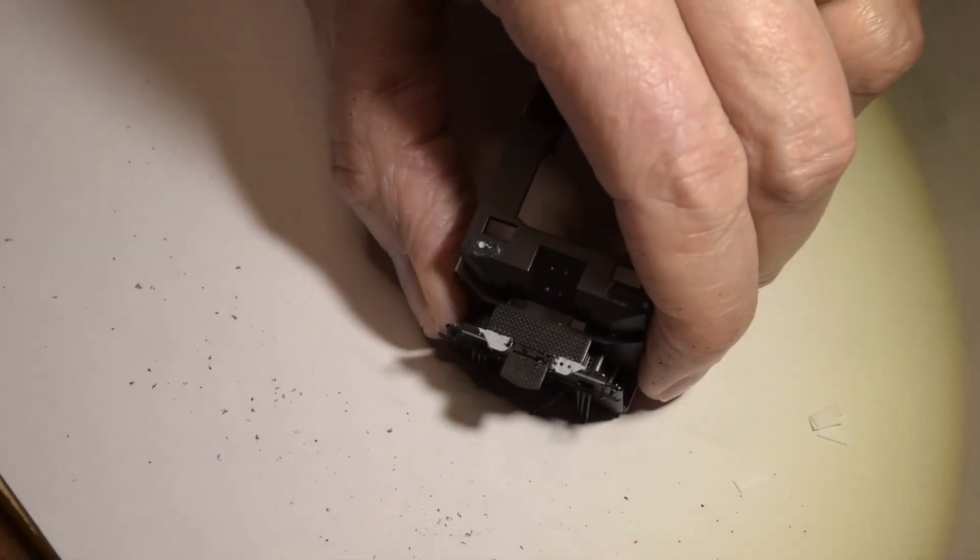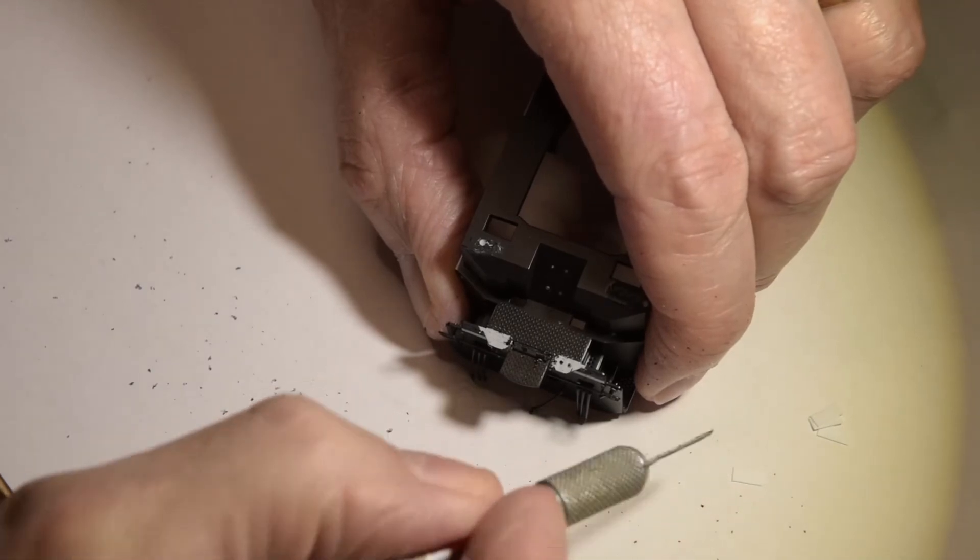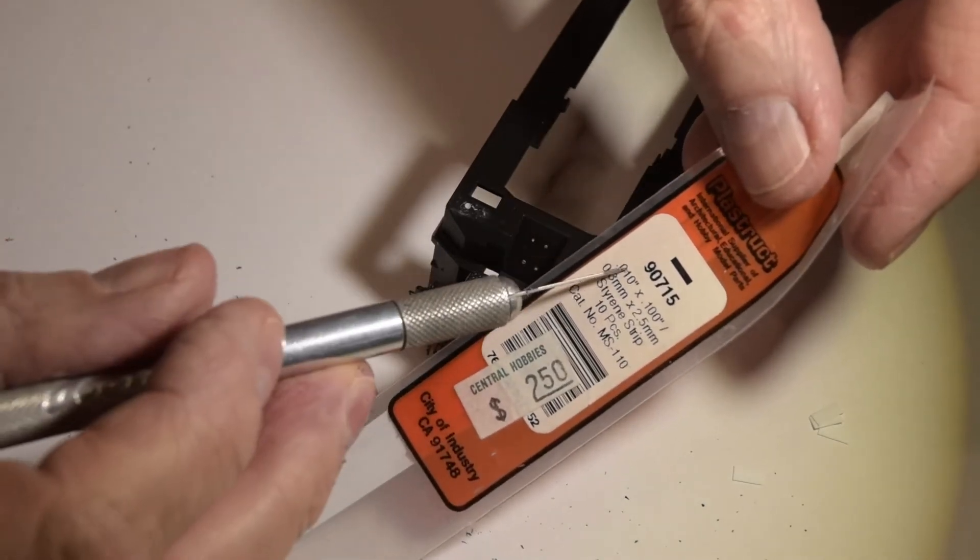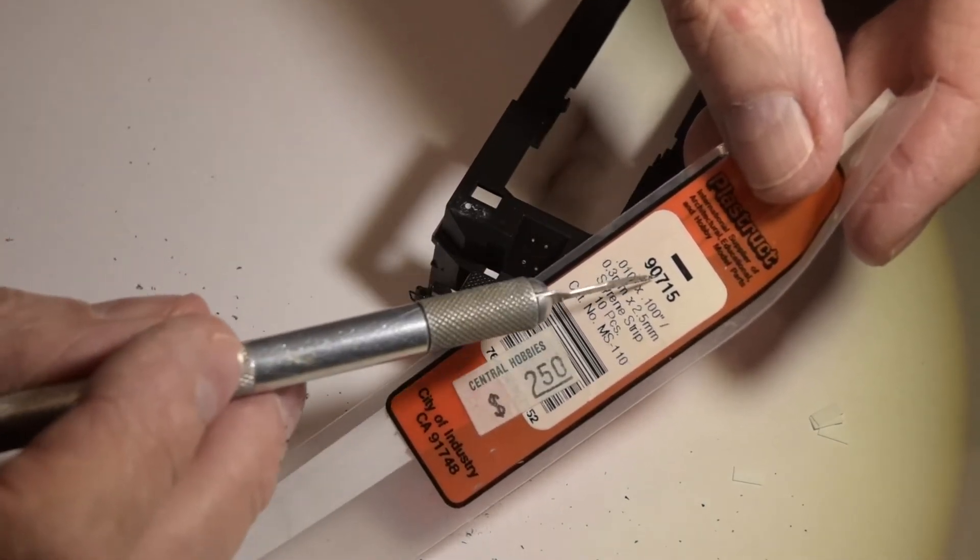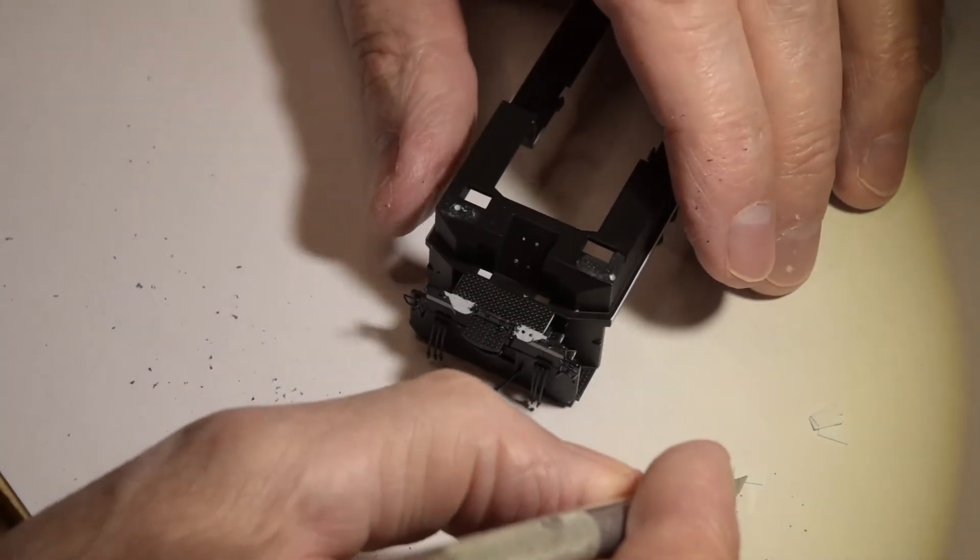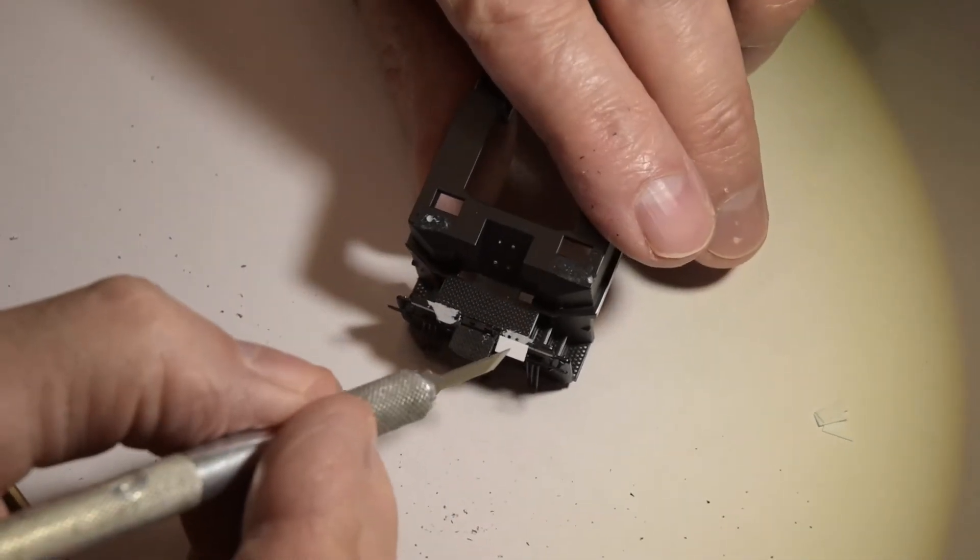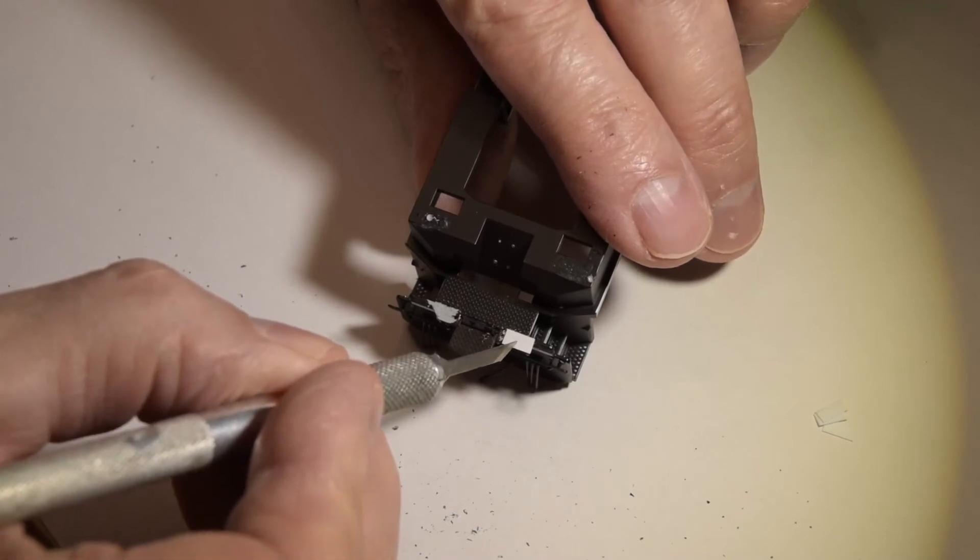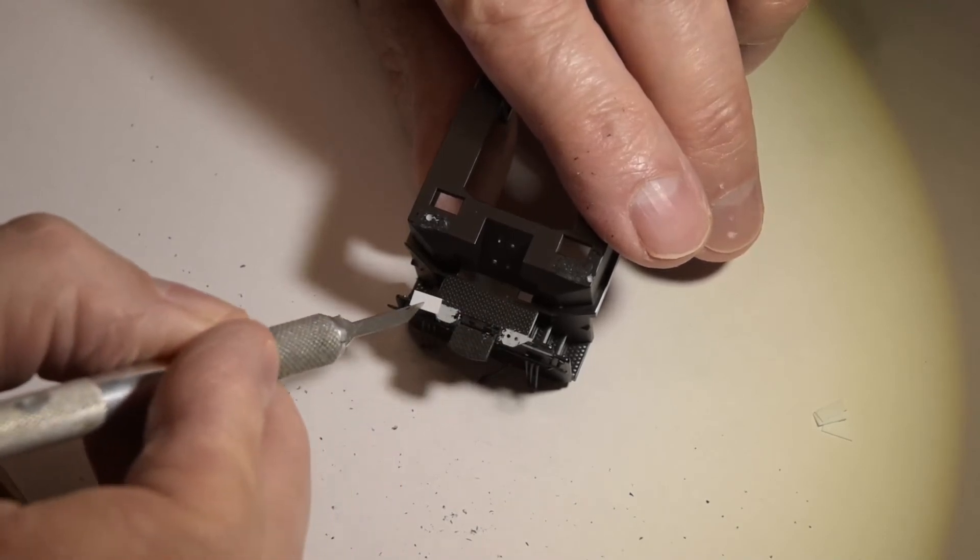Then you just take a small piece - I use Plastruct 10 thou thin, number 90715 - and I cut and measure some small plate pieces. Then I just weld bond them right on, on both sides.